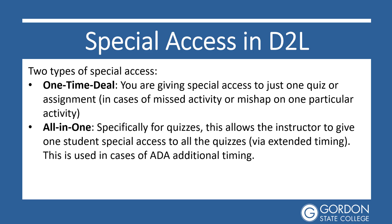There are actually two types of special access. The first is the one-time deal, which is when you as the instructor are giving special access to just one quiz or assignment — in cases where maybe the student missed the activity and you want to allow them to make it up, or there's some other mishap, like they're going to be having surgery and you want them to be able to take it early. So you're letting them test outside of the normal windows for just that one activity.